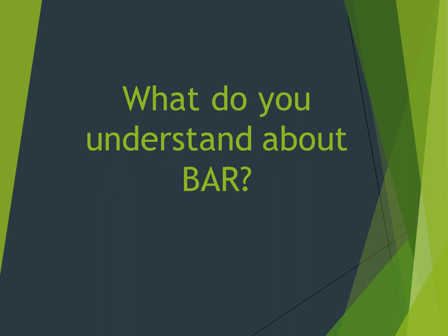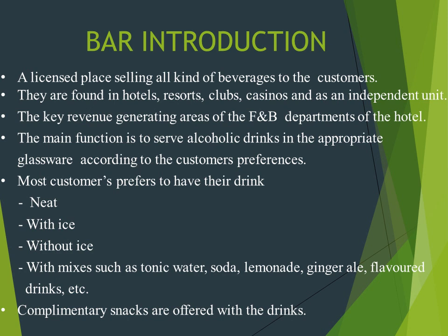What do you understand about bar? A bar is a place where all types of alcoholic beverages are served, with the accompaniment of snacks. It is a licensed place selling all kinds of beverages to the customers. The local, state, or country's authority should give a permit to sell alcoholic beverages in a licensed place. You cannot shift the bar from the licensed place.